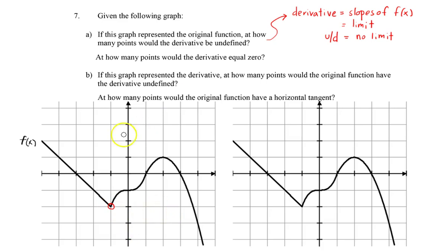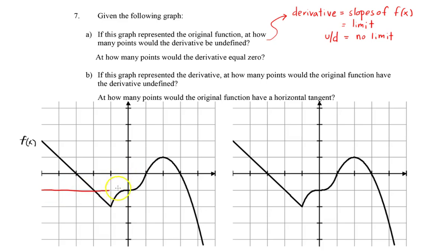Let me just draw the derivative — what will it look like? This first part is easy because this is a straight line. A linear function has as its derivative a constant function. I can tell the slope here is going down one and over one, so the slope is negative one. It's continuous until this point, so let's draw that as a horizontal line at negative one.